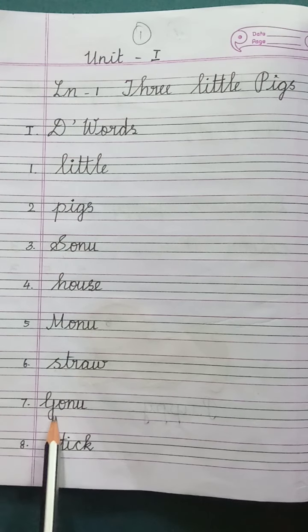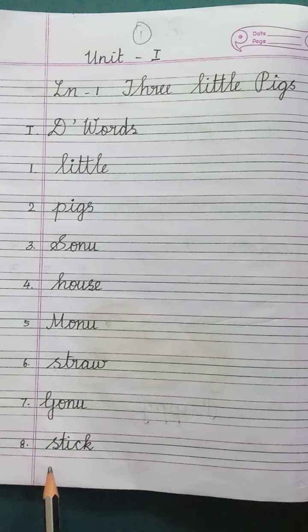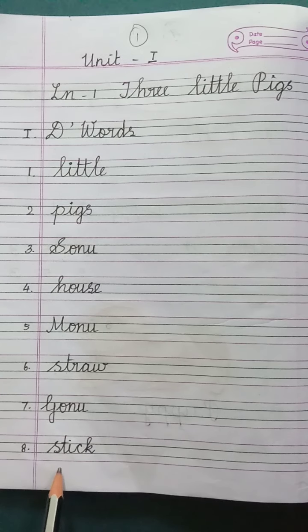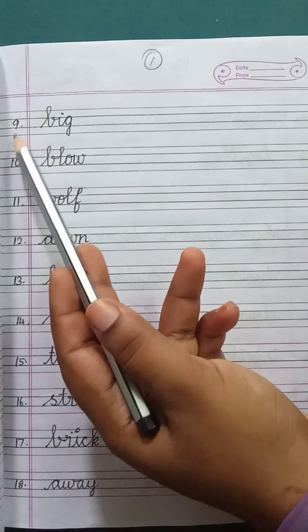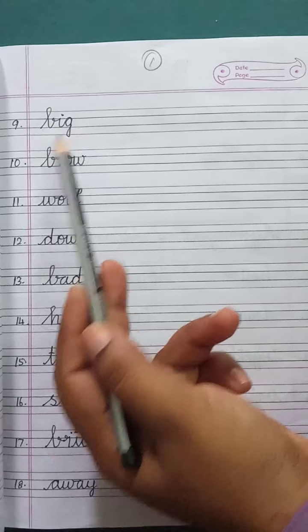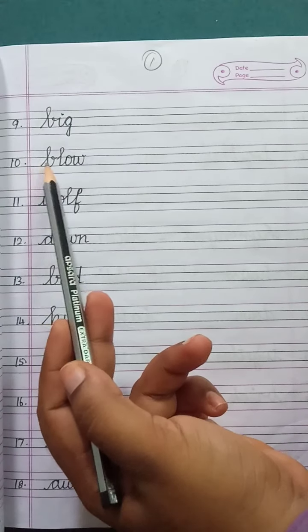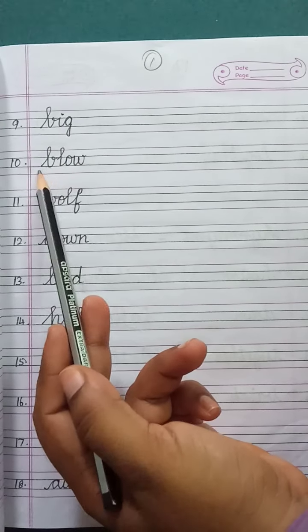Number 7: Gonu. G-O-N-U, Gonu. Number 8: Stick. S-T-I-C-K, Stick. Number 9: Big. B-I-G, Big. Number 10: Blow. B-L-O-W, Blow.